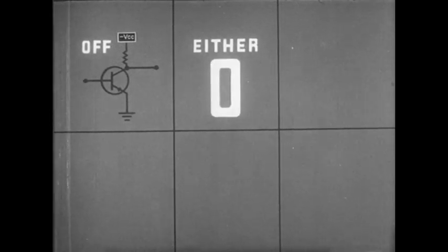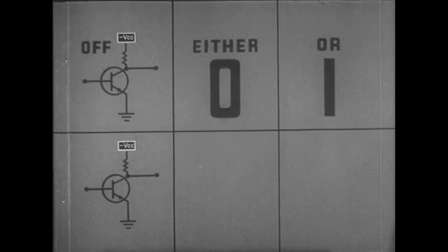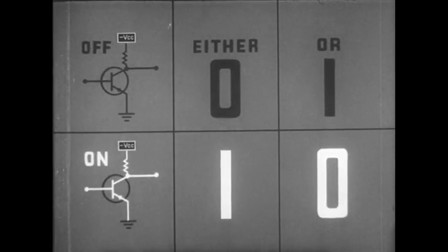In the off condition, the output can represent either zero or one. The choice is arbitrary. In the on condition, the output, of course, will represent the other digit.